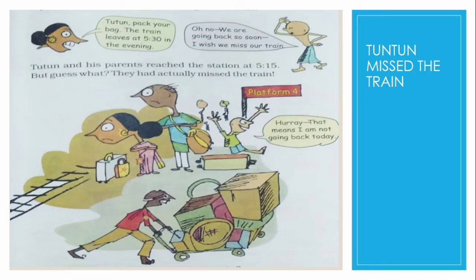Tuntun's mother said, 'Tuntun, pack your bag. The train leaves at 5:30 in the evening.' Tuntun said, 'Oh no, we are going back so soon. I wish we missed our train.' Tuntun and his parents reached the station at 5:50. But guess what? They had actually missed the train.